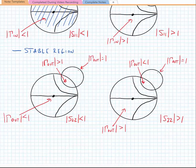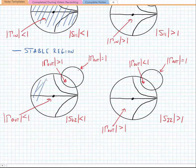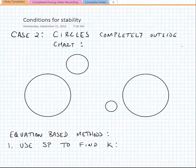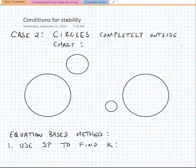In the cases we've just drawn, the shaded region on the left would be the stable region, and on the right, the shaded region here would be the stable region. Those are the cases if the stability circle overlaps with the Smith chart.